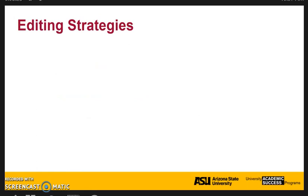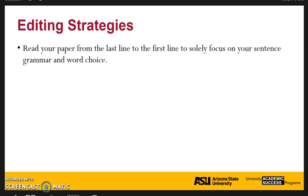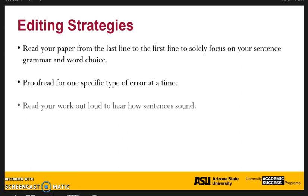Here are some proofreading strategies to help with editing to make sure your work is as correct as it can be as you are working on your final draft. First, try reading your paper from the last line to the first line. This will allow you to focus solely on your grammar and word choice without being distracted by the overall content of the paper. After you've identified your personal common grammar errors, try looking for one type of error at a time and focusing only on that. You can also try reading your work out loud — a lot of times you'll be able to identify sentences that sound awkward by reading out loud more easily than when reading it in your head.